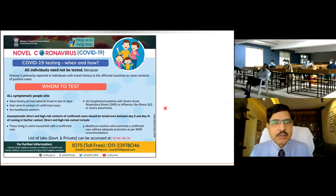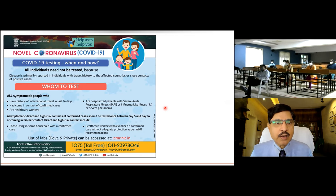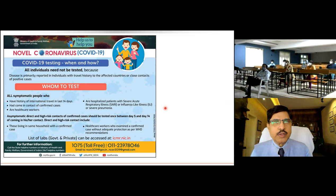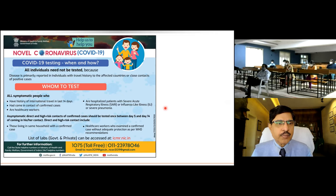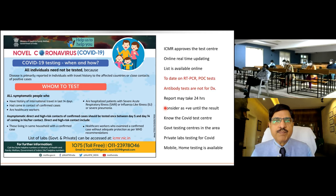This is the ICMR and Ministry of Health recommendation on whom to test: all symptomatic people with history of travel or contact with a confirmed case, healthcare workers, all hospitalized patients with severe acute respiratory illness, influenza-like illness, or severe pneumonia. Asymptomatic patients with direct or high-risk contacts of confirmed cases should also be tested between the fifth and fourteenth day. This includes all persons living in the same household, including servants.